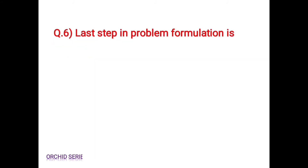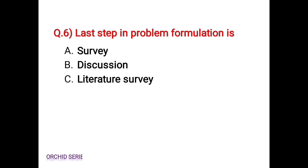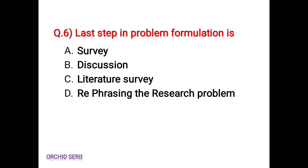Question number 6: the last step in problem formulation is — option A: survey; option B: discussion; option C: literature survey; option D: rephrasing the research problem. After completing the four steps in problem formulation, we have to rephrase the research problem, which is the last step in problem formulation.